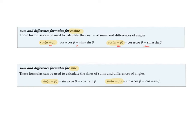I want to note that with sine, if it says plus in the parentheses, it's a plus in the formula; if it says minus, it's a minus. Also, the sine formula pattern is sine, cosine, cosine, sine — whereas the cosine formulas are cosine, cosine, sine, sine. So if you're working on memorizing these, please pay attention to those subtle differences.